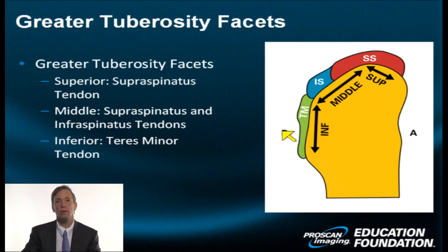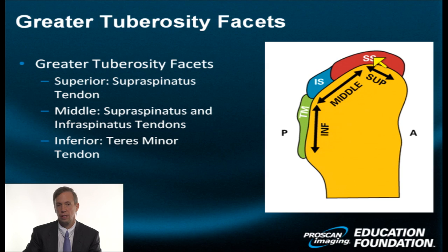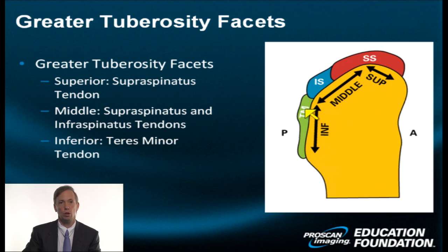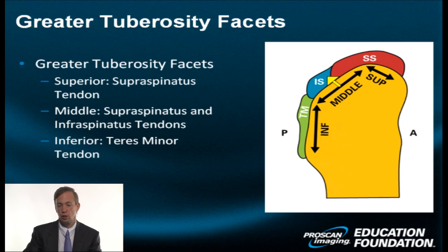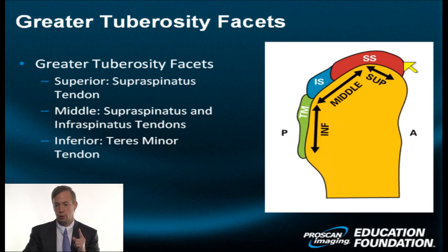We see the supraspinatus (SS) in red, the infraspinatus in blue, and the teres minor in green — only three components of the multifaceted rotator cuff complex. The supraspinatus is more anterior, the infraspinatus more posterior, and the teres minor posterior-inferior. Their footprints are on the superior, middle, and inferior facets of the humerus.